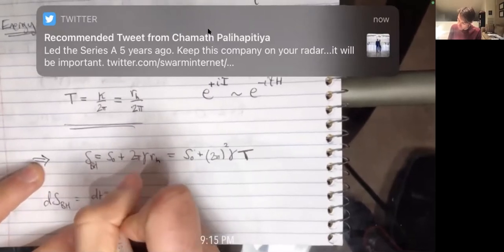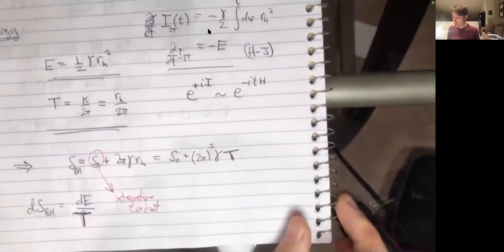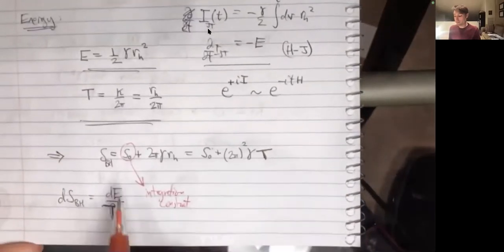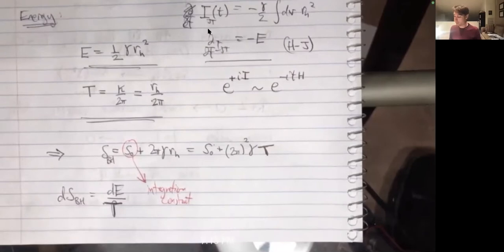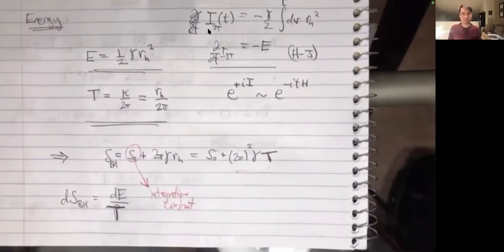Using the first law, S equals dE over temperature, we can integrate straightforwardly to find the thermodynamic entropy. The only ambiguity is the integration constant S_0, which you can't fix from the first law alone. It's written here as the same S_0 that appeared as the coefficient of the Einstein-Hilbert action — this is unjustified at the moment, but we'll see later there's a good reason: it's given by that topological term.